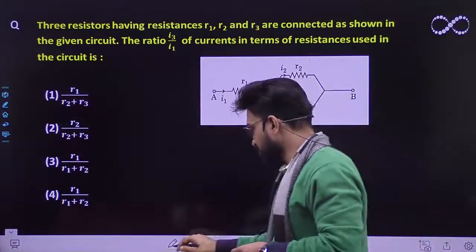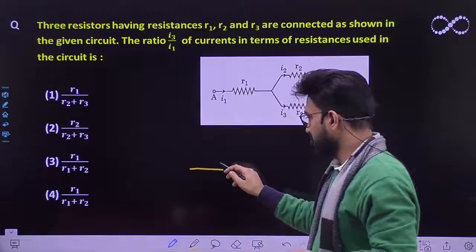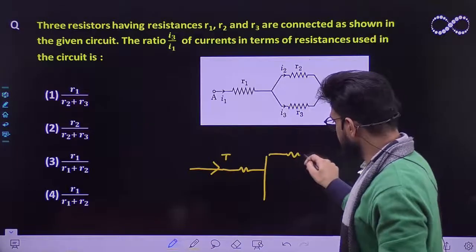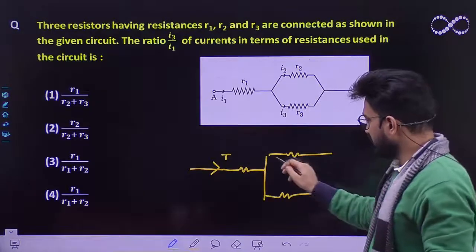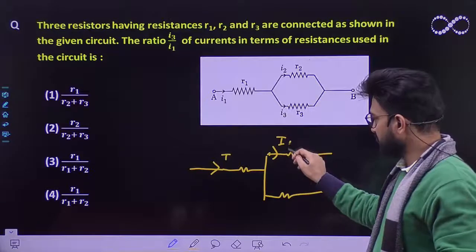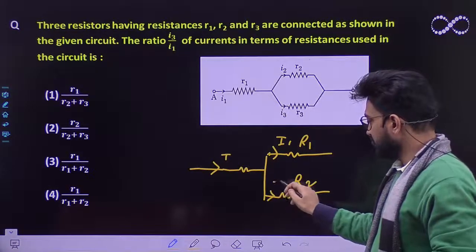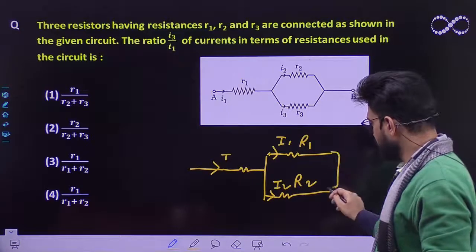We already know the current distribution formula. If current I comes from this end and is distributed across two parallel combinations, let this be I1, this resistance is R1, this resistance is R2, and the current in this circuit is I2.